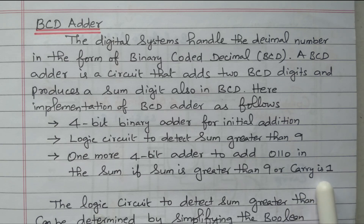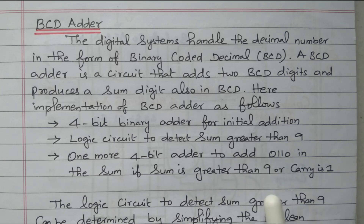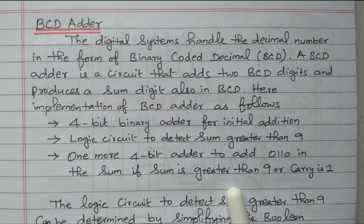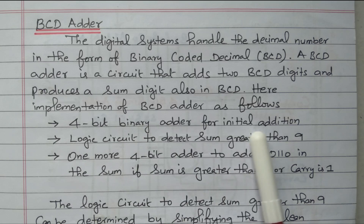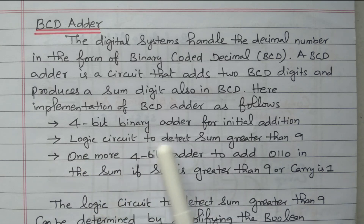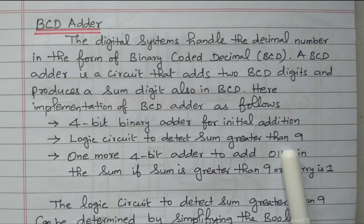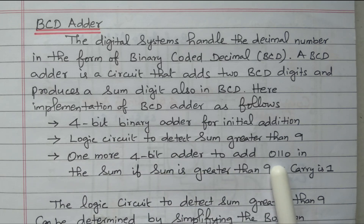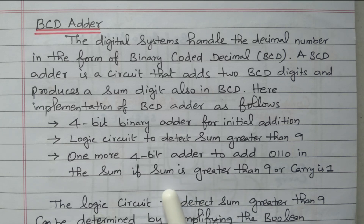And also, if the carry is generated, in that case also, we have to add 0, 1, 1, 0. So, these three things we need to keep in mind while going for a BCD adder: first, a four-bit BCD adder for initial addition; second, we need to check whether the sum is greater than nine; if the sum is greater than nine, then we need to add 0, 1, 1, 0 — the decimal equivalent of six — with the sum in order to get the correct answer.